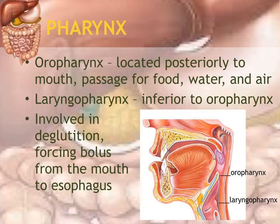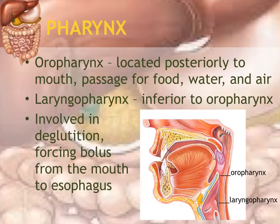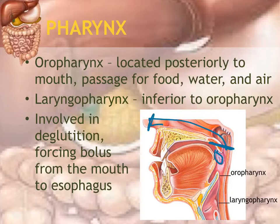The pharynx is another word for the throat. The oropharynx and laryngopharynx are passageways for food, water, and air, whereas the nasopharynx — just posterior to the nasal cavity — is only a passage for air. During deglutition, the soft palate closes off the passageway to the nasopharynx so food does not go up into the nasal cavity, and the food pushes down on the epiglottis to close the opening to the trachea, so food passes down into the esophagus.